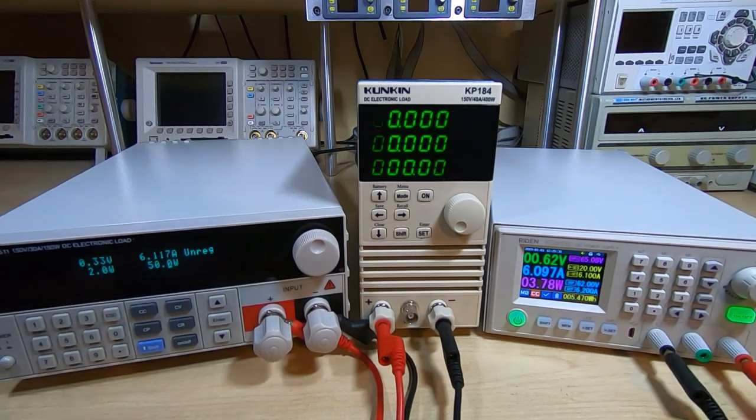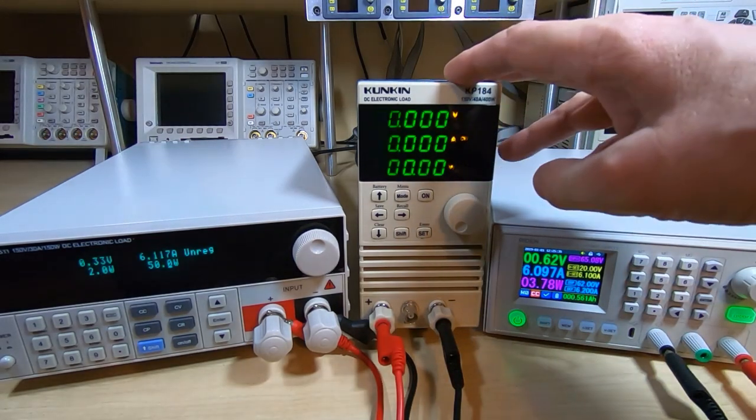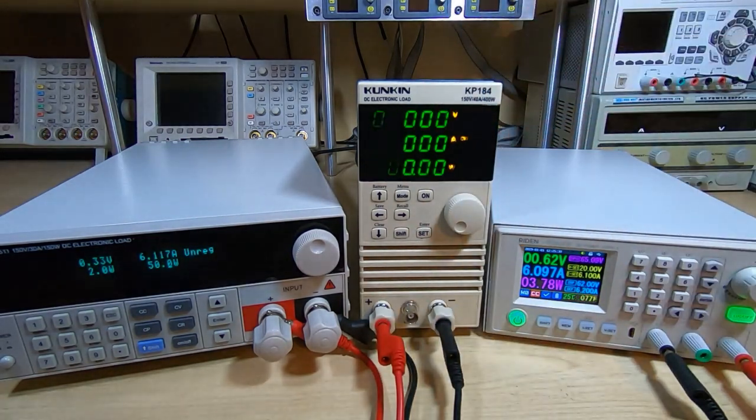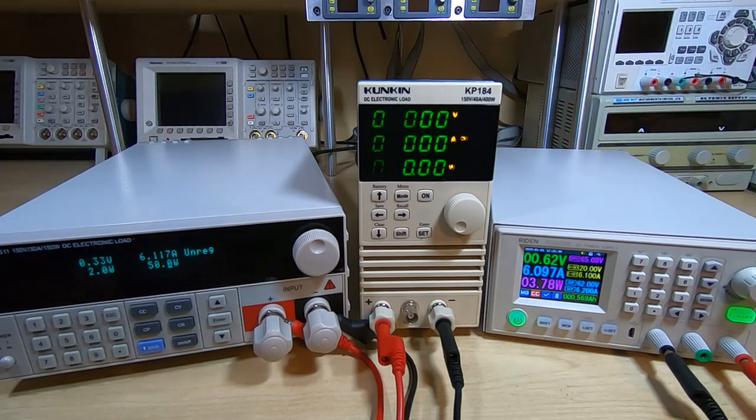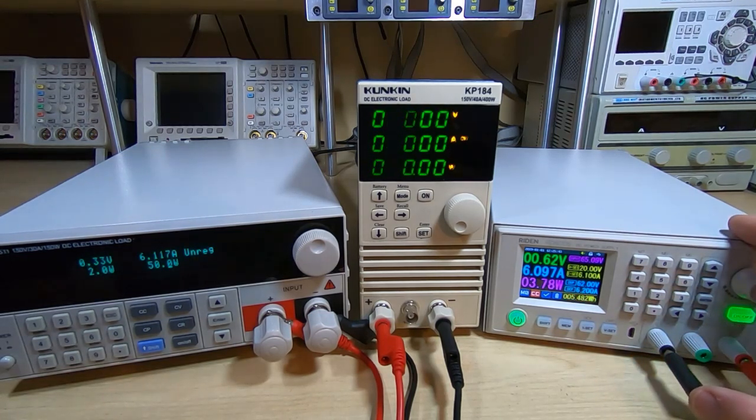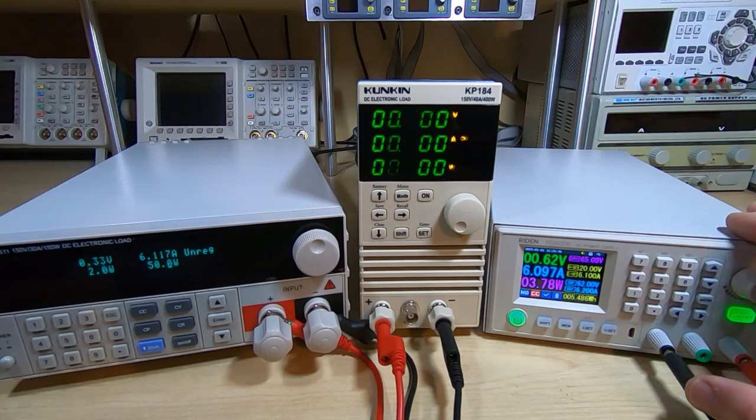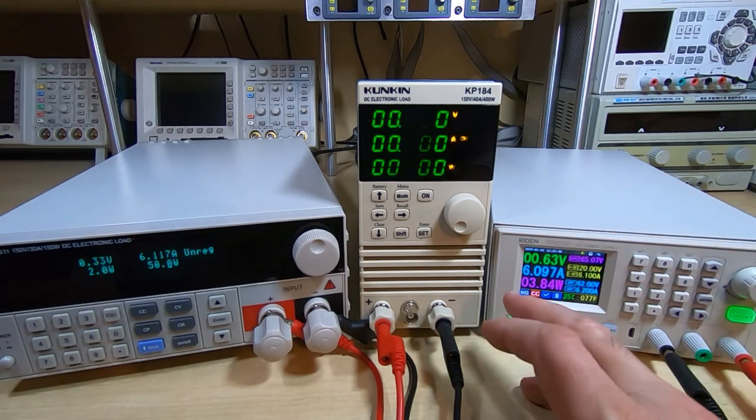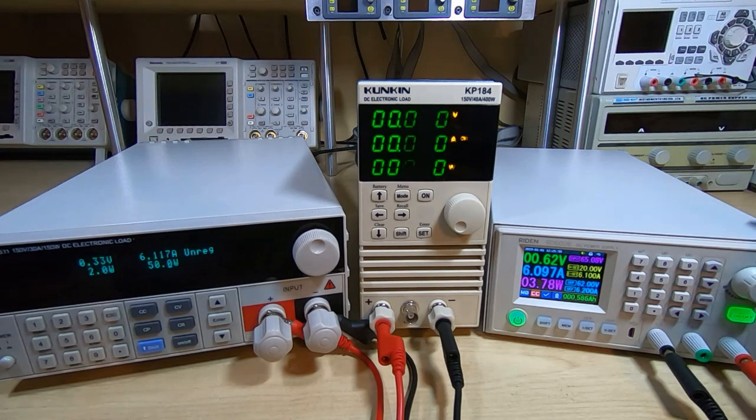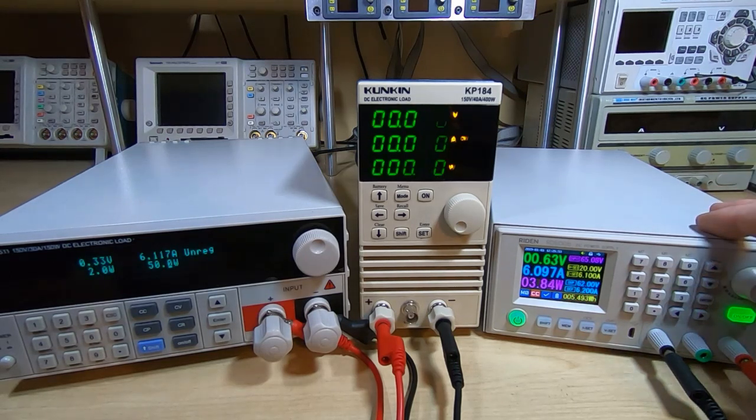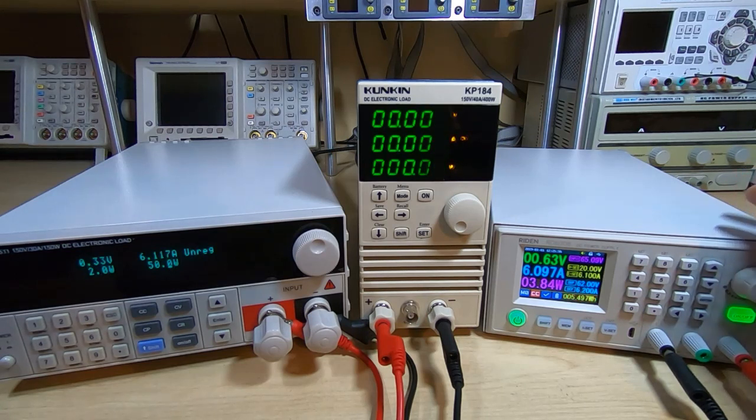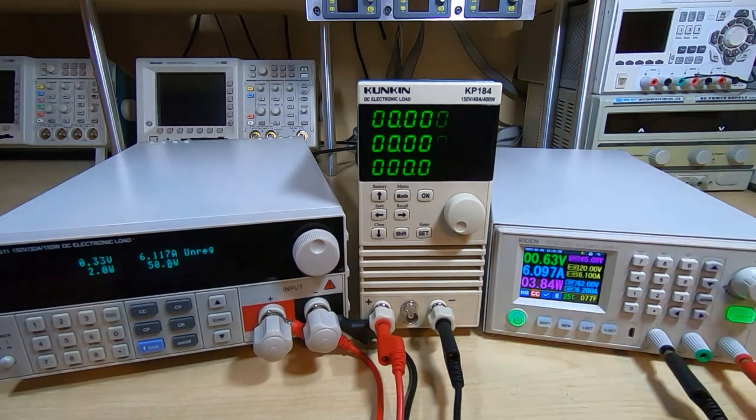As I said, I thought I'd make this video just to clarify that with a cheap load like this, you may have to spend a bit of time finding out how to adjust it to make it work with a device you're trying to test. But it is pretty much always caused by the load ramping up the current too quickly and driving your supply into one of its limiting modes, whether it be voltage or current, and then the two start fighting each other.